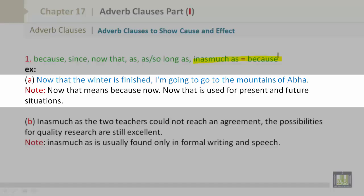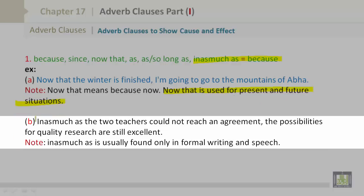Now, A. Now that the winter is finished, I'm going to the mountains of Abha. Now that means because now. Now that is used for present and future situations. B. Inasmuch as the two teachers could not reach an agreement, the possibilities for quality research are still excellent. Inasmuch as is usually found only in formal writing and speech.